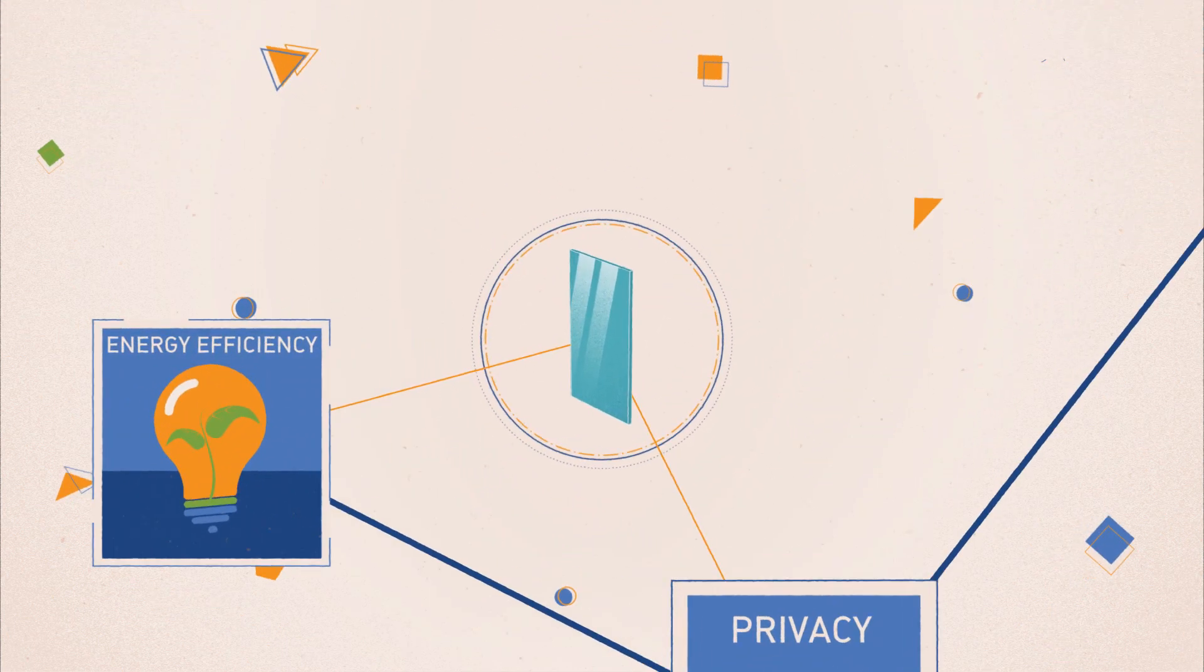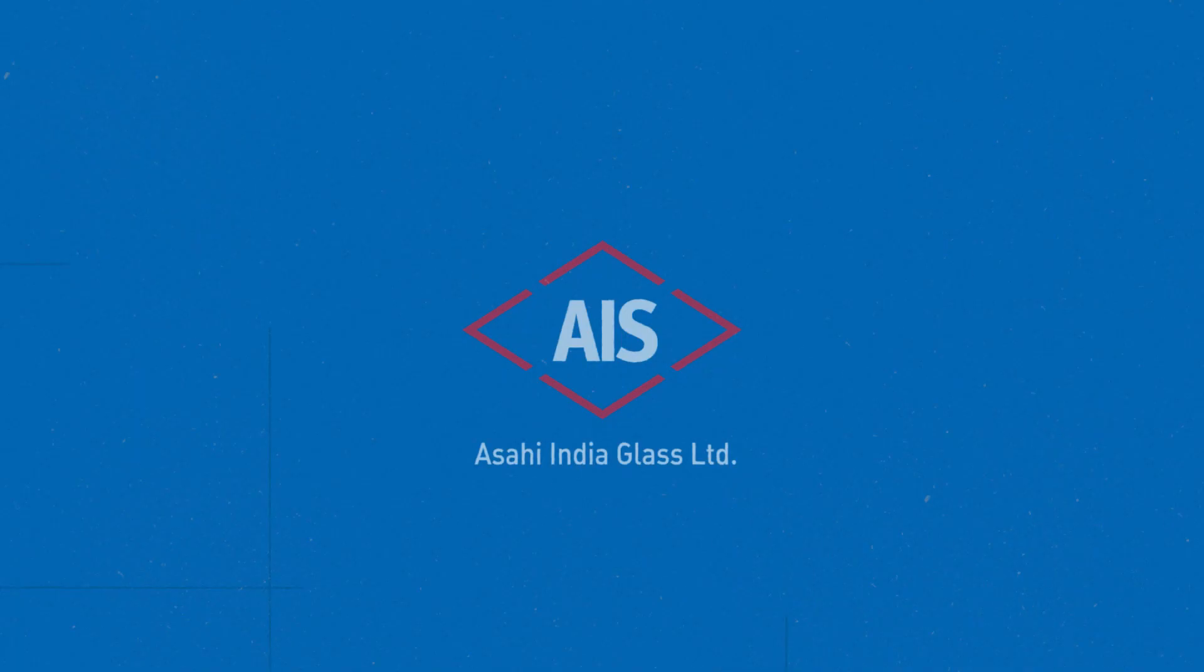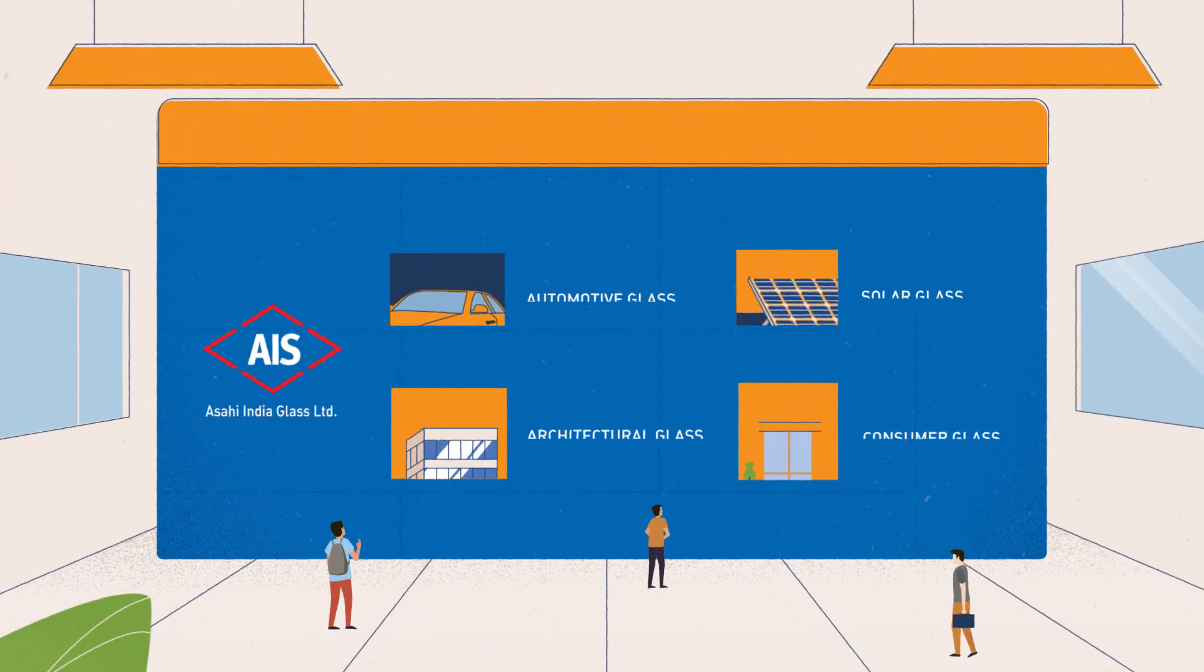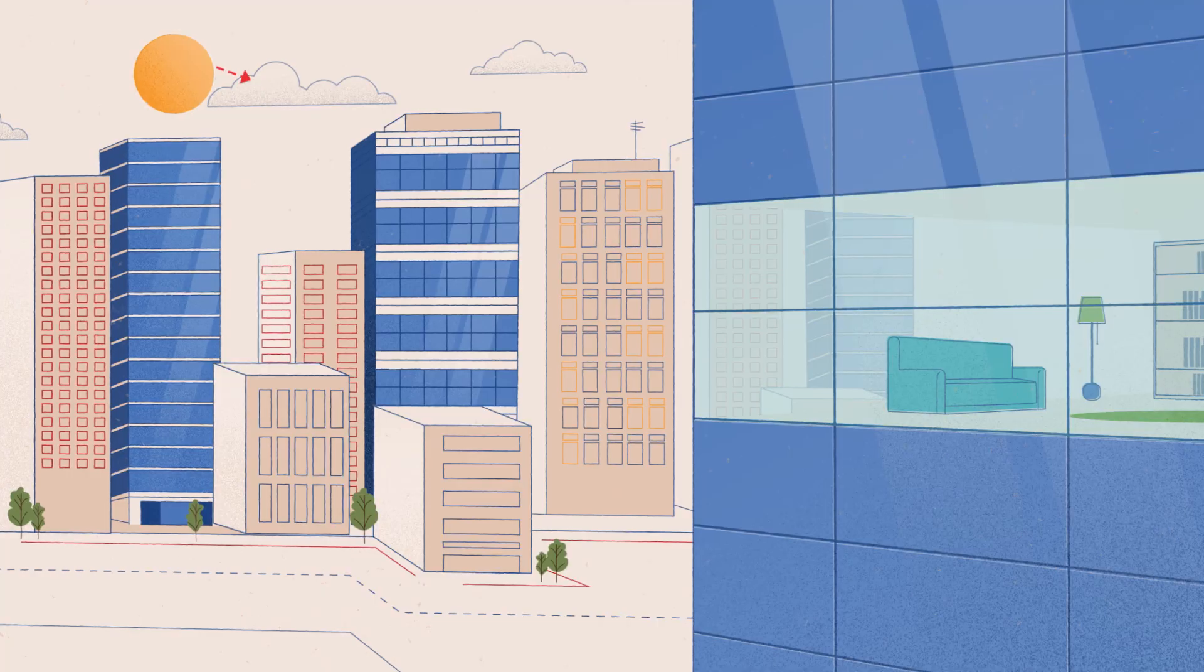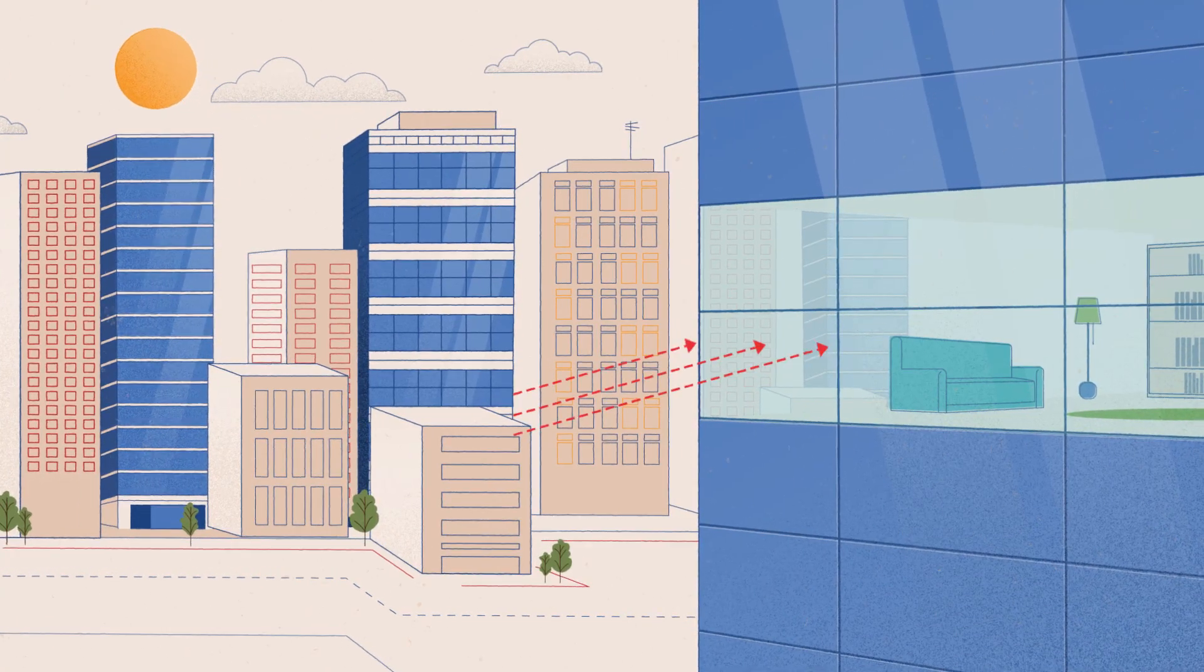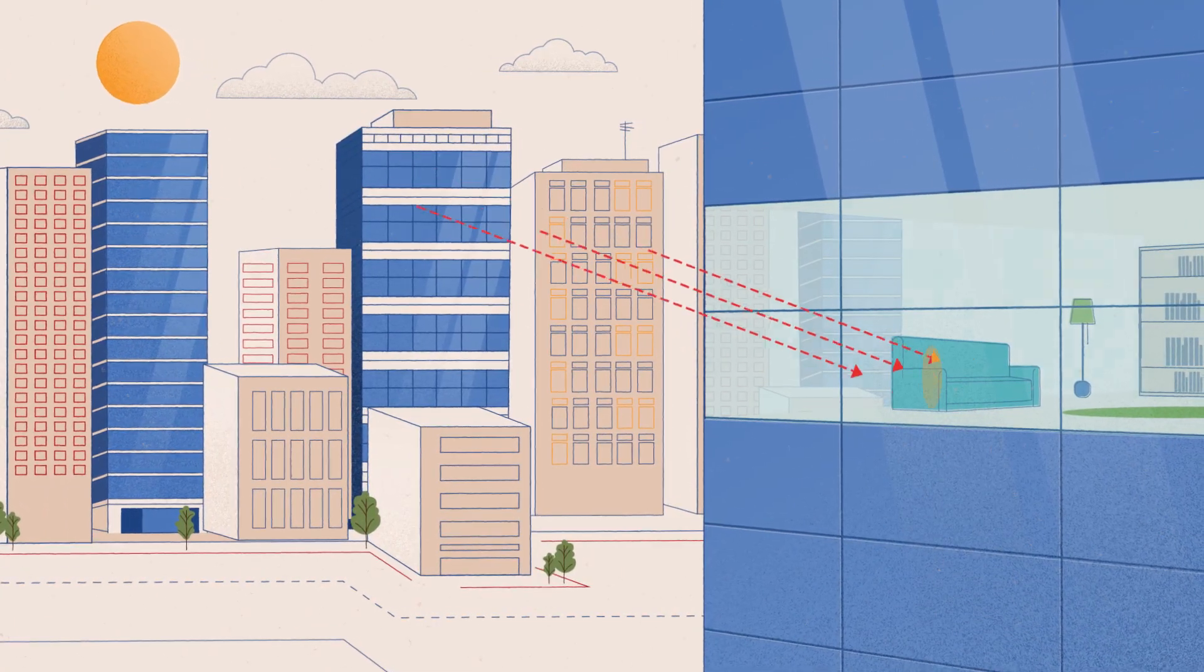you can select the ideal glass to transform your space. Here, at India's leading integrated glass company, AIS, we offer a wide variety of high-performance glasses under our EcoSense range, which protects from solar and non-solar heat and provides optimum daylight.